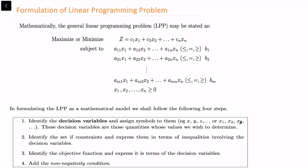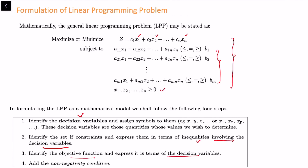This is the third video on formulation of linear programming problems. We want to construct a mathematical model involving linear decision variables with constraints and non-negative restrictions. To do this, we need to identify decision variables, write down the given conditions as inequalities, and express the objective function in terms of decision variables, including non-negative restrictions.